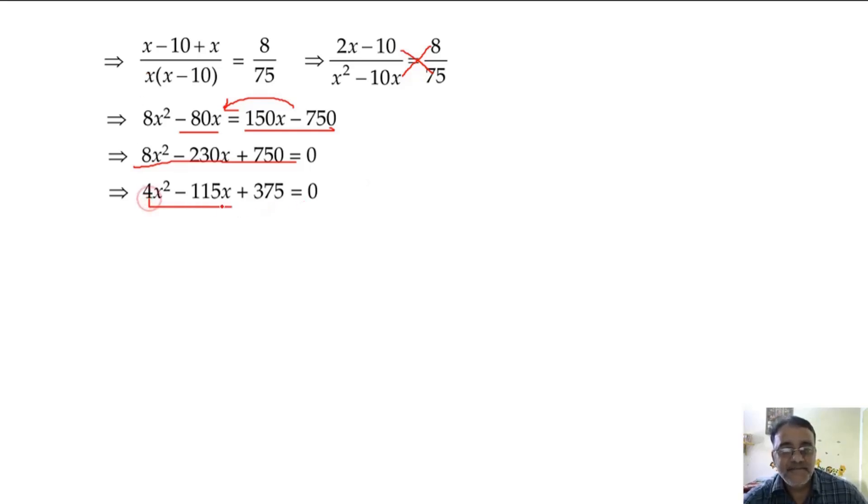What is the product here? Product is 375 into 4, which is 1500, and the sum is minus 115. So two factors of 1500 whose total should be 115: 100 and 15. Both will be negative.